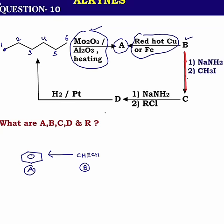You can see the arrow. It is in this direction B to C. NaNH2 methyl iodide. Therefore, first acid base reaction followed by nucleophilic substitution. So, this is propine.